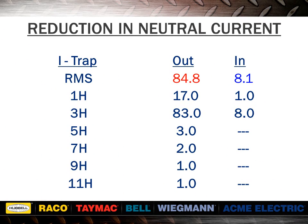Here we see that the total neutral current of 84.8 amps is greater than the highest phase current of 63.2 amps. Notice that the total neutral current has been reduced by almost 90%, from 84.8 to 8.1 amps.